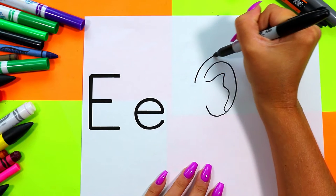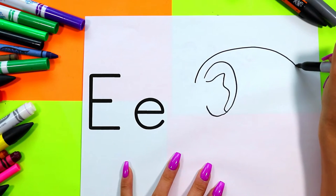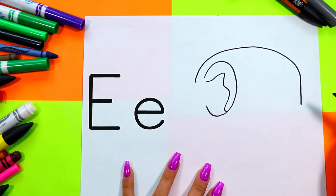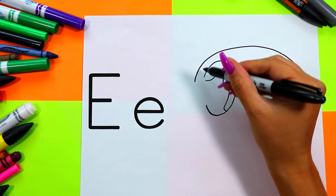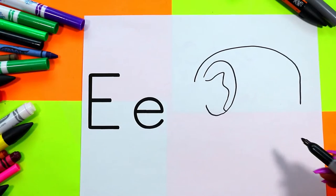Next, we're going to draw a big curving line up, around, and down for the top of elephant's head and elephant's back.